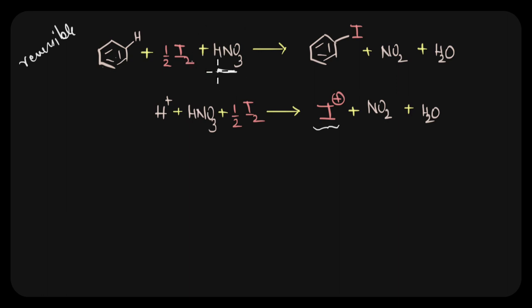Lastly, we cannot use this method to produce fluorocompounds because of the very high reactivity of fluorine. This high reactivity of fluorine makes it very difficult to control the reaction. So this is how haloarenes can be prepared via electrophilic substitution reactions.